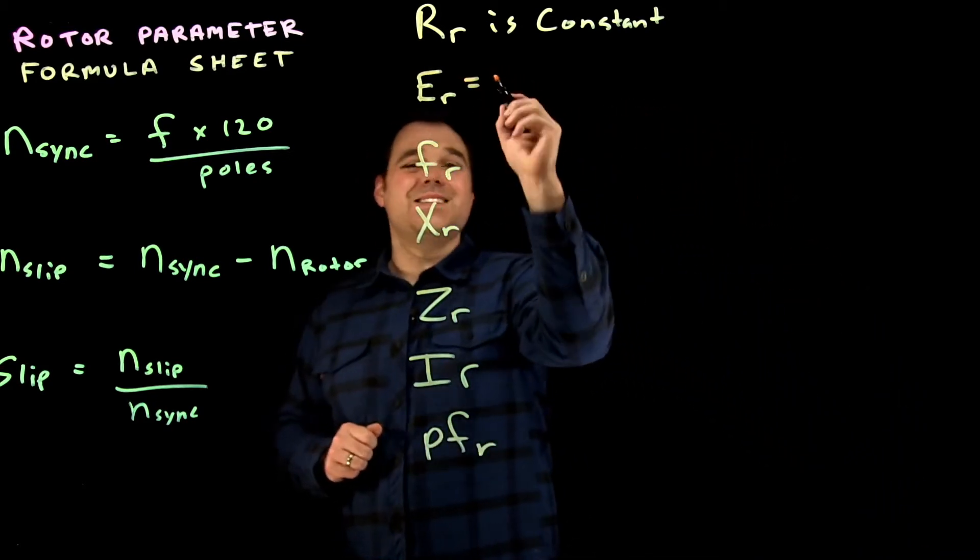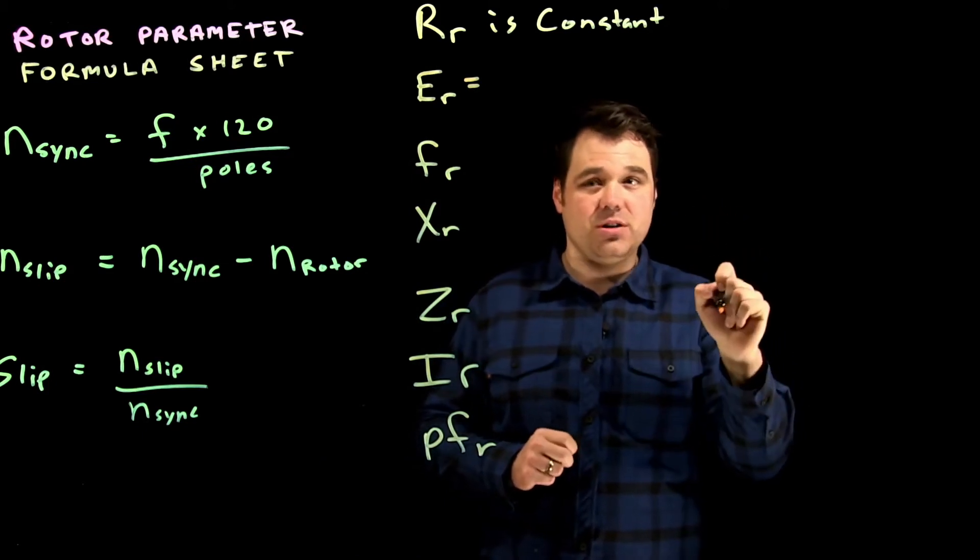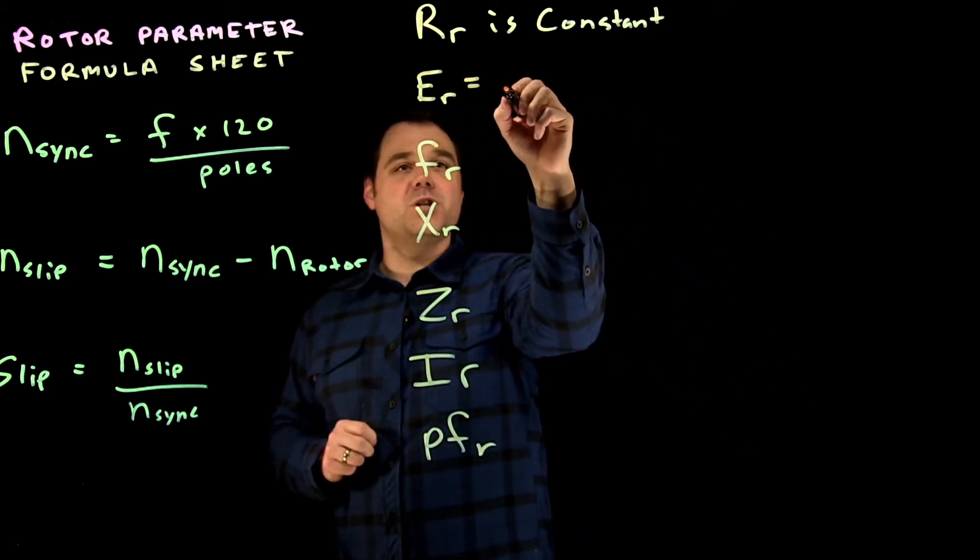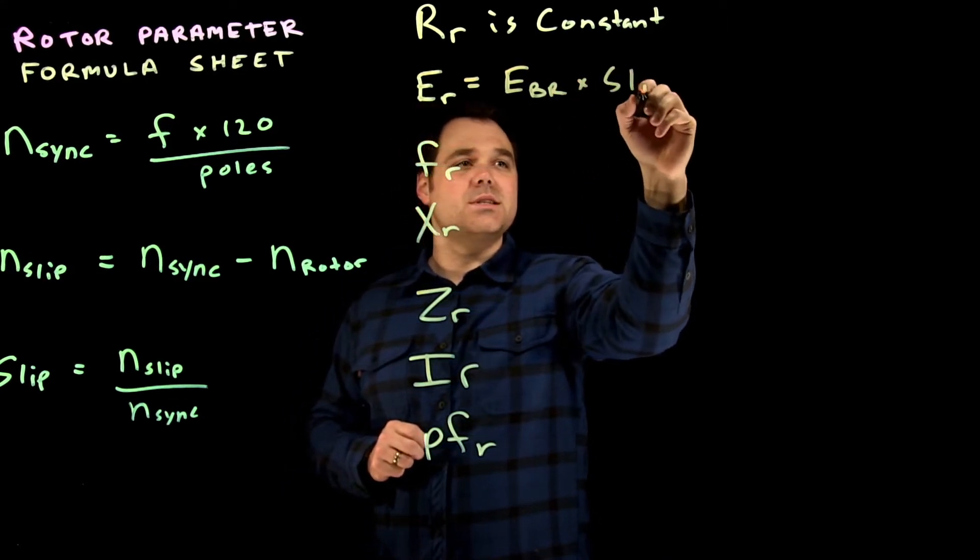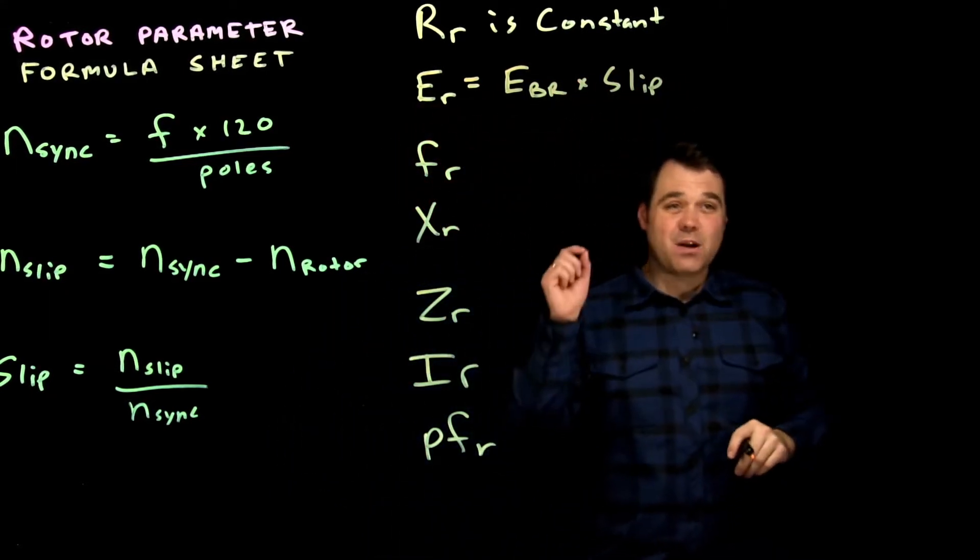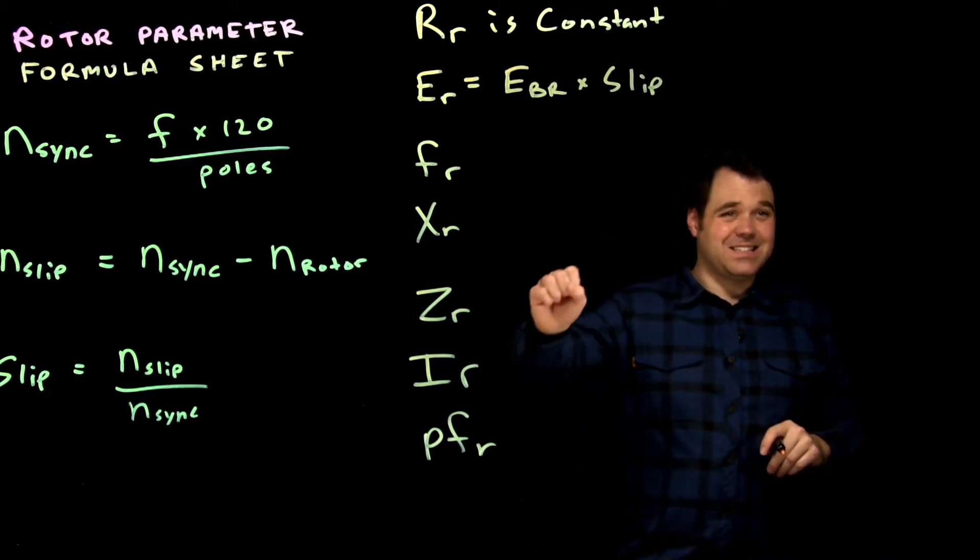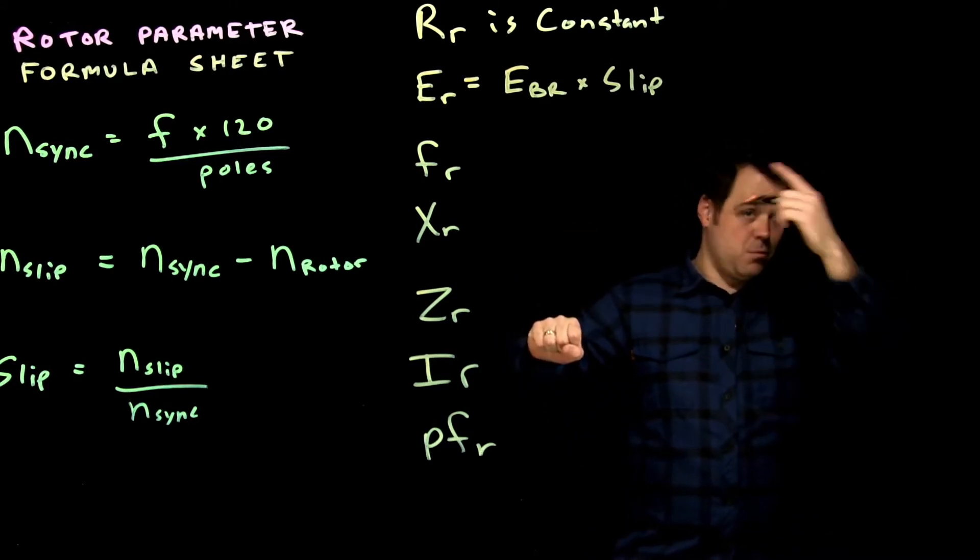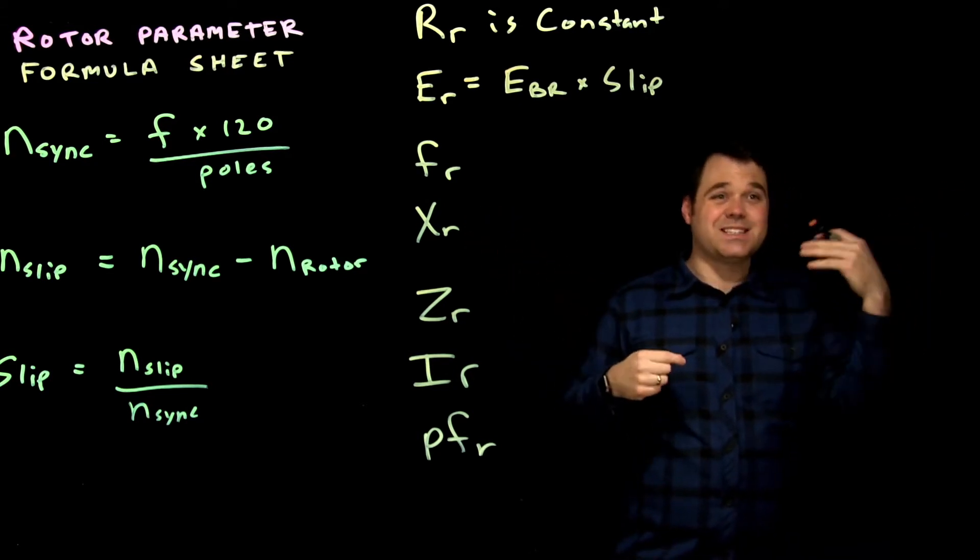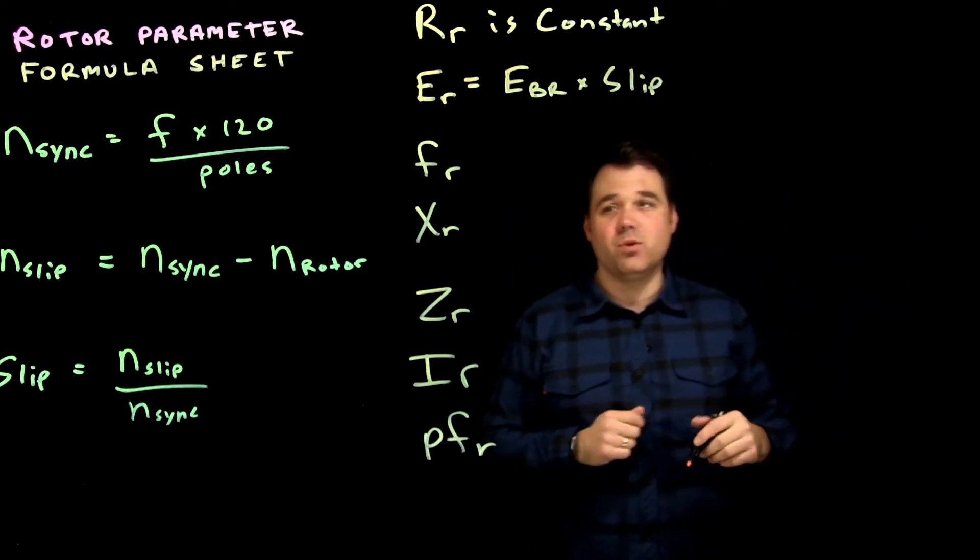Voltage is directly proportional, which means that it will just be the voltage of the blocked rotor times slip. Now blocked rotor is when that rotor is not spinning, it's zero RPM, it's at a standstill and my stator is spinning at 100% or my synchronous speed. So that's a slip of 100% is my blocked rotor voltage.